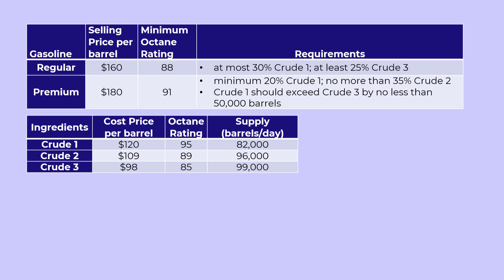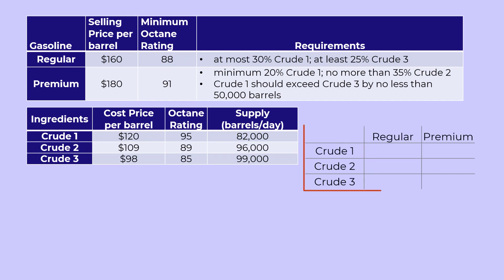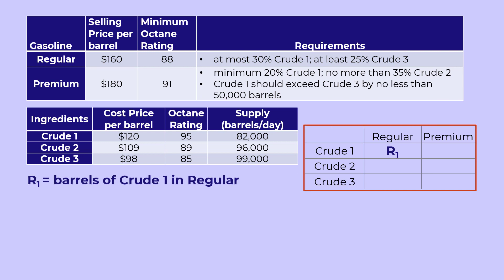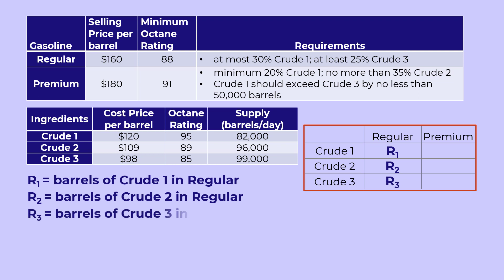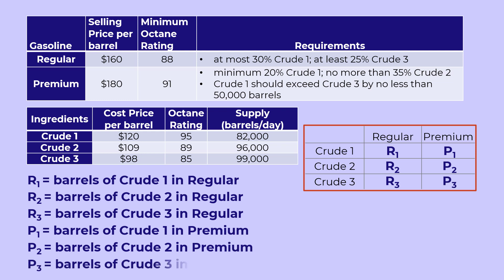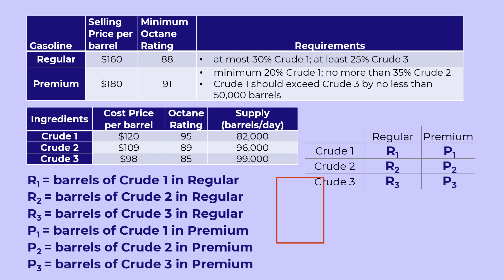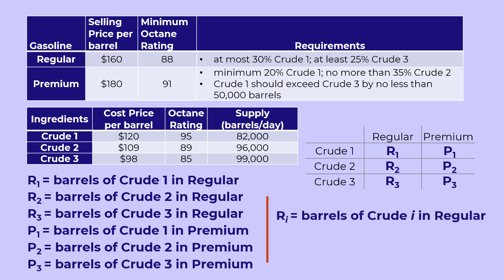A nice way to set up the decision variables is to create a table like this one. We can let R1 be the amount — that is, number of barrels — of crude 1 in regular gasoline. Likewise, R2 will be crude 2 in regular and R3 will be crude 3 in regular. Similarly, for premium, we have P1, P2, and P3. Equivalently, we could write RI as barrels of crude R in regular and PI as barrels of crude R in premium, where R equals 1, 2, and 3.